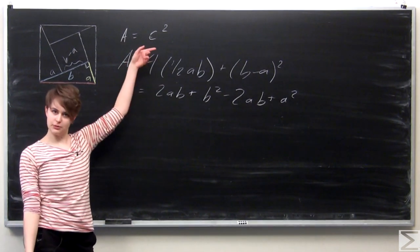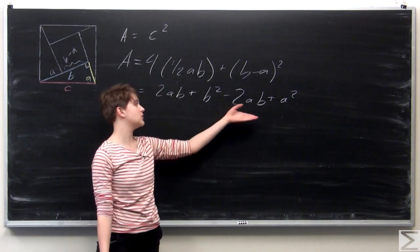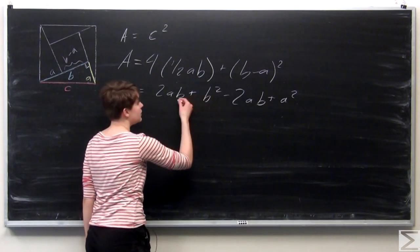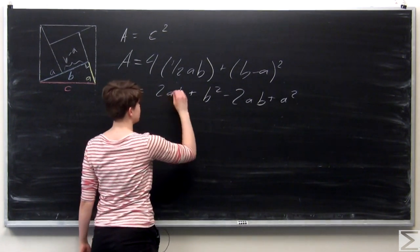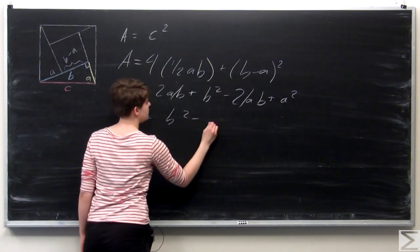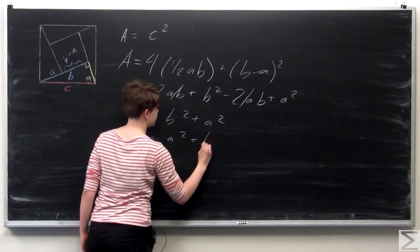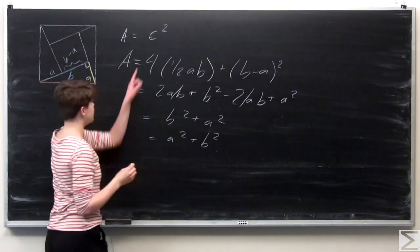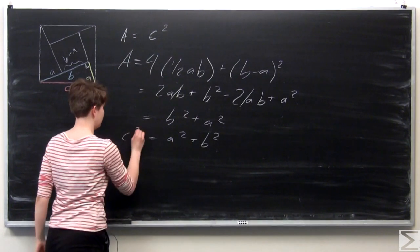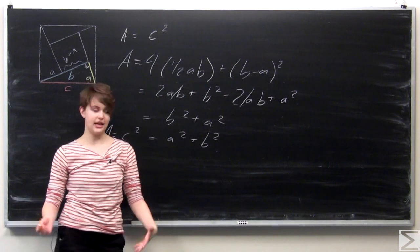That equals A, our expression for area. So we have A = C² and A = 2AB + B² − 2AB + A². The 2AB and −2AB cancel out, leaving B² + A², which is trivially equal to A² + B². Since A equals both C² and A² + B², we get C² = A² + B², which is once again the Pythagorean theorem.